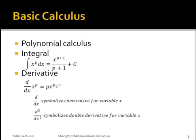Now, what if you took a derivative of a constant? A constant would be like 3, 4, 5, etc. Basically, if you take a derivative of any constant, it would go to 0, which is how you would get rid of that constant c in the integral if you took a derivative of that integral.